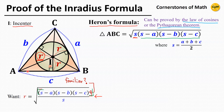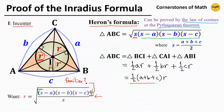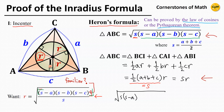If we connect the in-center I with the three vertices, then the area of triangle ABC can be obtained from the areas of triangles BCI, CAI, and ABI. For triangle BCI, the base length is A and the height is R, the in-radius. For triangle CAI, the base length is B and the height is R. And for triangle ABI, the base length is C and the height is R. Therefore, we can write it as one-half times (A plus B plus C) times R, and since one-half times (A plus B plus C) equals S, this equals SR. Comparing the two expressions, we have the square root of S(S minus A)(S minus B)(S minus C) equals SR.